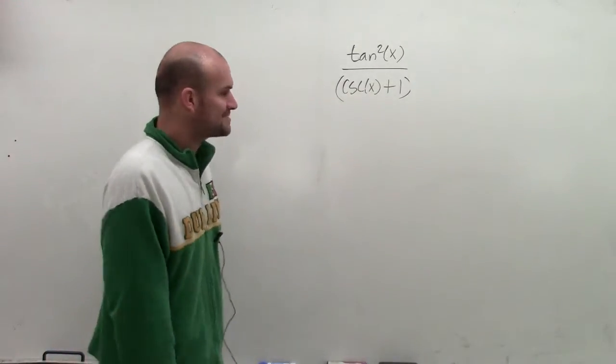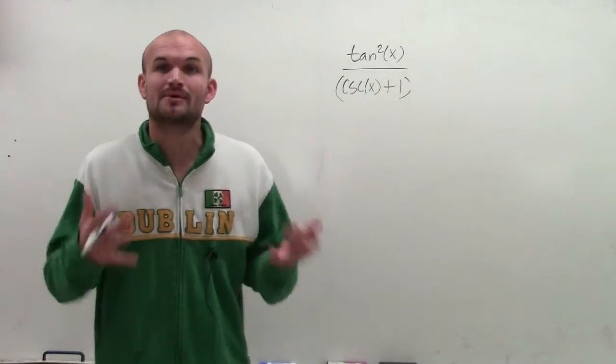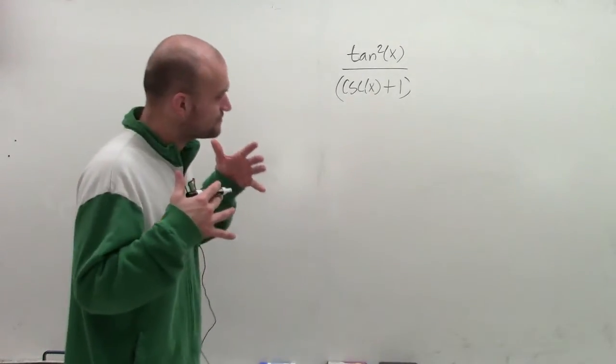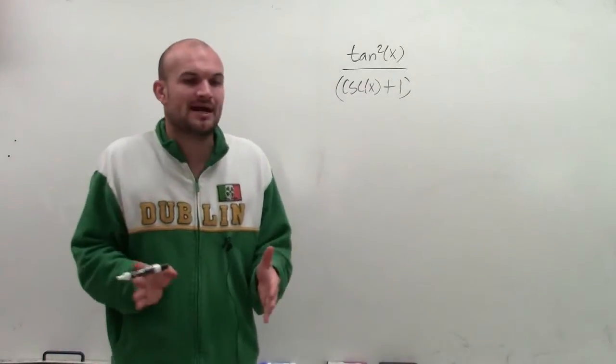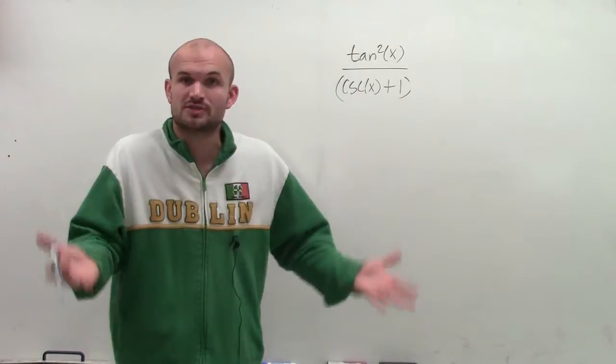So I'm looking at cosine of x plus 1. And to get that off the denominator, what I'm going to want to do is multiply by the conjugate. Now, the reason why I'm going to want to multiply by the conjugate, because when you multiply a binomial times its conjugate, you produce the difference of two squares.